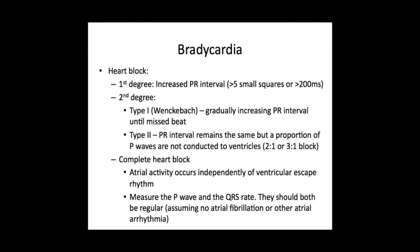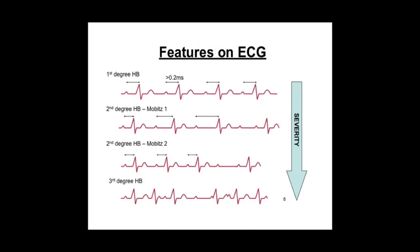Finally, you can have complete heart block. Here, atrial activity doesn't find its way down to the ventricles, so you end up getting a ventricular escape rhythm. Here we have examples of these different types of heart block and what they look like on the ECG. First degree heart block is where you have an increased PR interval but otherwise regular conduction and regular QRS complexes. In type one or Wenckebach second degree heart block, you have a gradually increasing PR interval until a beat is missed.